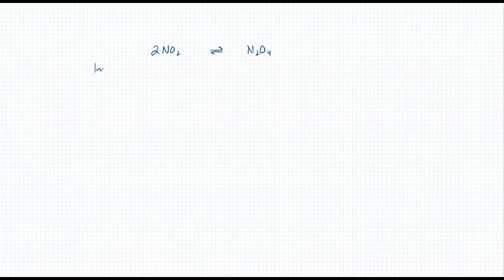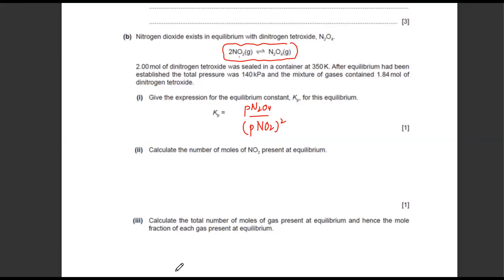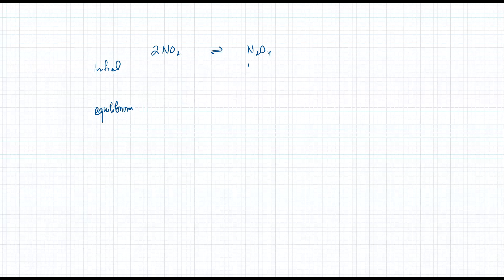We need to set up the ICE table. Initially, there were 2 moles of dinitrogen tetraoxide (N2O4) and 0 moles of NO2 — no NO2 was added to the container. After equilibrium was established, the total pressure was 140 kPa and the mixture contained 1.84 moles of N2O4.